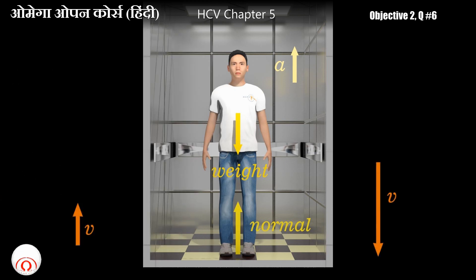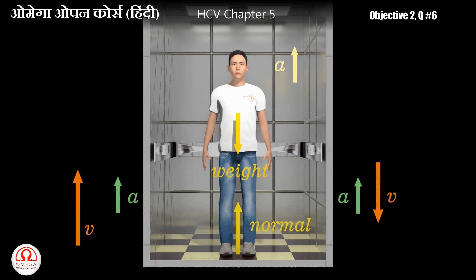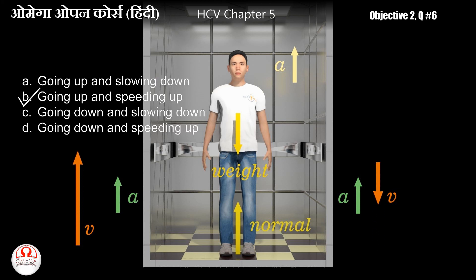इसलिए acceleration अगर ऊपर की तरफ होना है तो या तो elevator ऊपर की तरफ बढ़ते speed से जाए, या फिर नीचे की तरफ घटते speed से। मतलब answer B और C होगा।